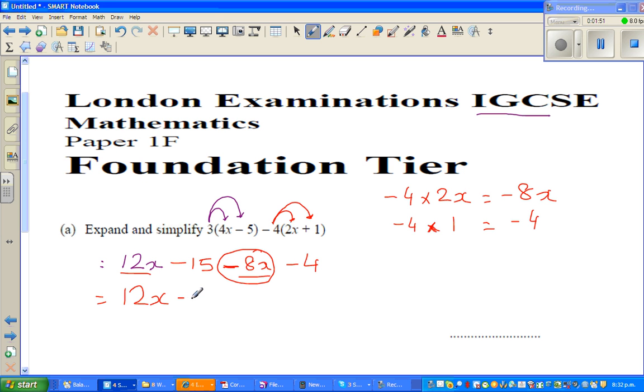These two remain together, so it's minus 8x. Then you've got a minus 15, minus 4. These two are called like terms. You can simplify like terms. That means you can add or take away like terms.